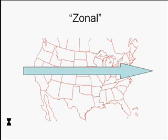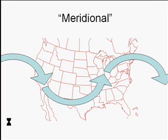Now the mid-latitude jet stream can occur in one of two different configurations as it goes from west to east around the world. It can either be zonal, which means it just goes straight from west to east — which is not terribly common and not terribly interesting. The more interesting possibility is that the flow can be meridional. When the flow is meridional, the jet stream meanders to the north and south as it works its way from west to east around the world.